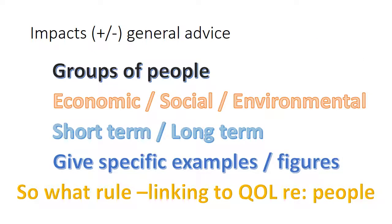General advice for impacts: try to name your different groups of people. The exam board wants you to cover economic, social, and environmental. Consider whether they are short-term or long-term. Try to give specific examples and specific figures. If linking to people or social impacts, always link to quality of life using comfort, access, privacy, and safety. Also, don't just think impacts are negative — there are positives and negatives of any event in geography.